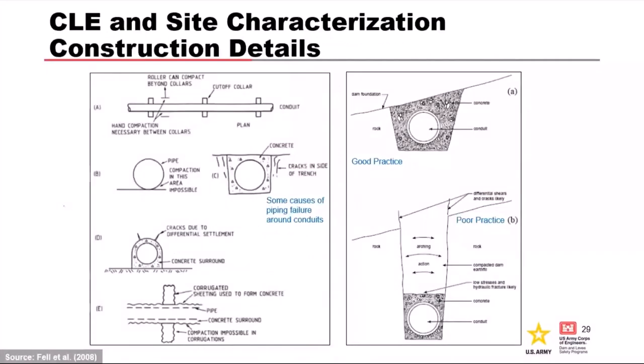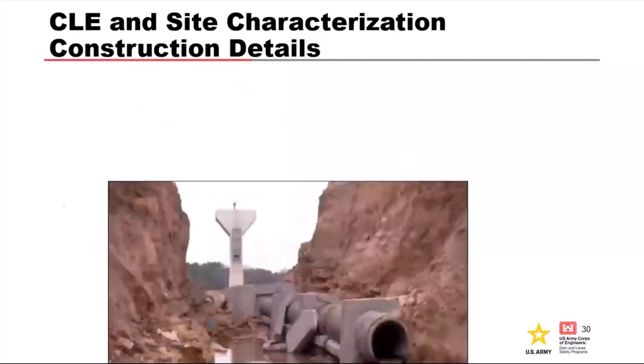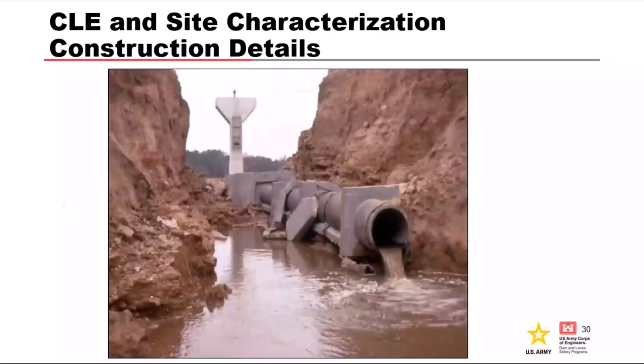Looking at construction details when characterizing a site — these are less about the ground and more about understanding how constructed features interact with the ground. You're going to be thinking about conduits, how compaction was performed, and how the ground responds to excavation. This is an example of CLE that occurred along a conduit and led to breach.